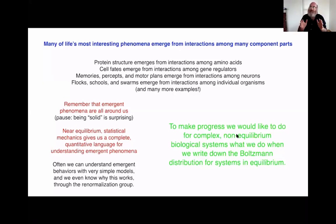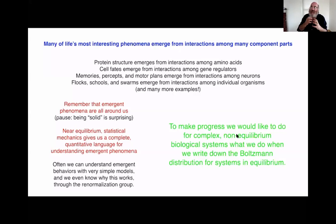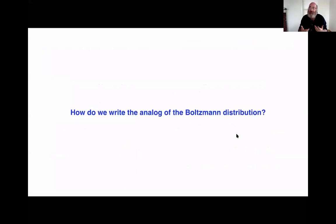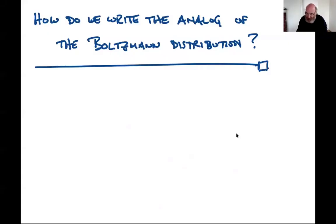What I want to remind you of is that in statistical mechanics, at least when we're close to equilibrium, the first step is to write down the probability distribution for all of the microscopic states of the system - the Boltzmann distribution. When you write that the probability of the system being in a particular state is e to the minus the energy of that state divided by kT, you're writing a description for the probability of finding all the component parts in any particular microscopic configuration. What we'd like to do is figure out how to do that in the context of a biological system. I'm going to switch from slides to the blackboard now.